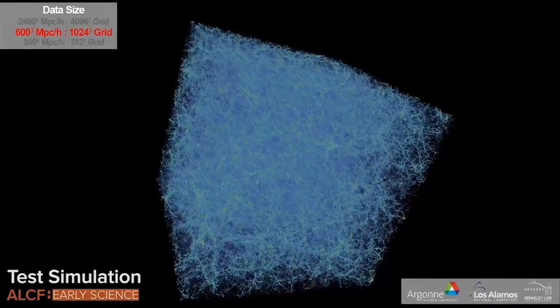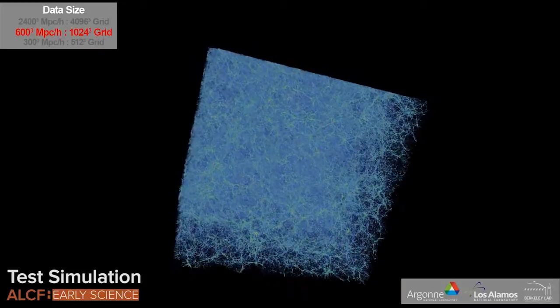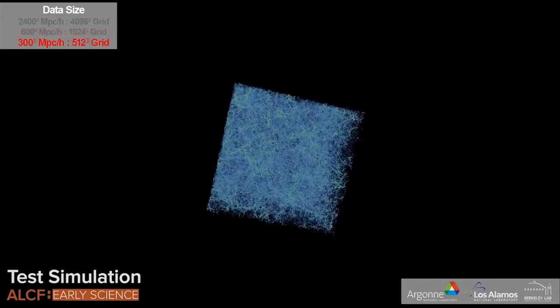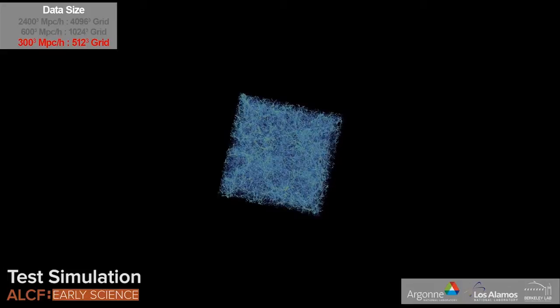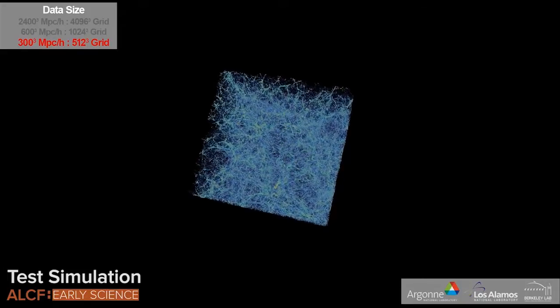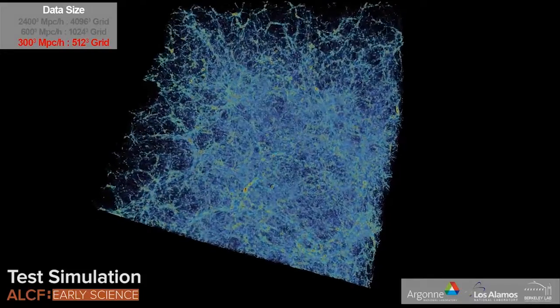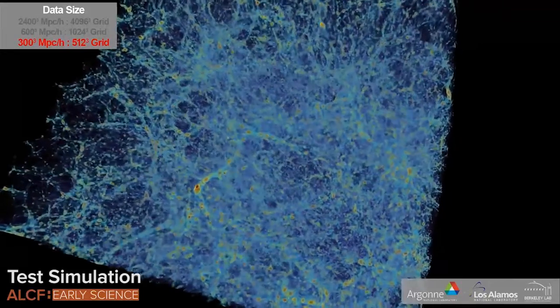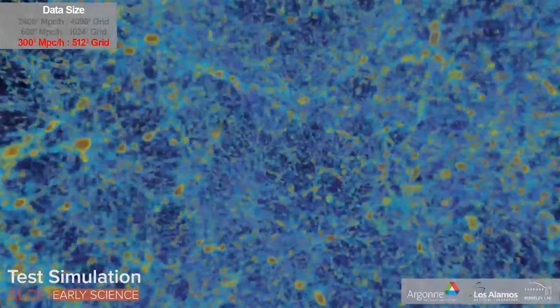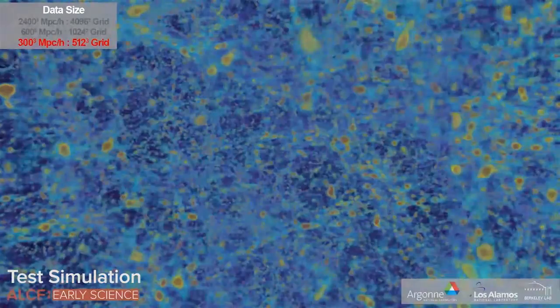So what we will be able to do is to actually simulate a very large portion of the observable universe and do it with very high resolution so we can see very small structures in the simulation. For the first time, we can actually take an observed survey and in effect put the entire thing inside a computer. Basically produce a virtual universe that can be modeled to look very close to the survey. And that's a new thing.